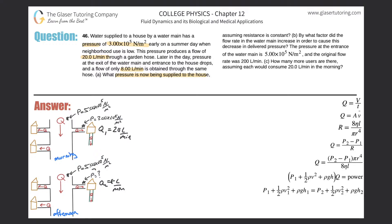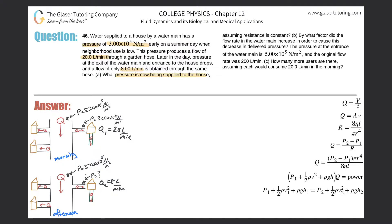We want to find what pressure is being supplied to the house. If the pressure was higher in the original case and produced the original flow rate, the pressure must now be lower to produce the lower flow rate. We can set up a proportion: q_initial divided by q_final equals the initial pressure divided by the final pressure.